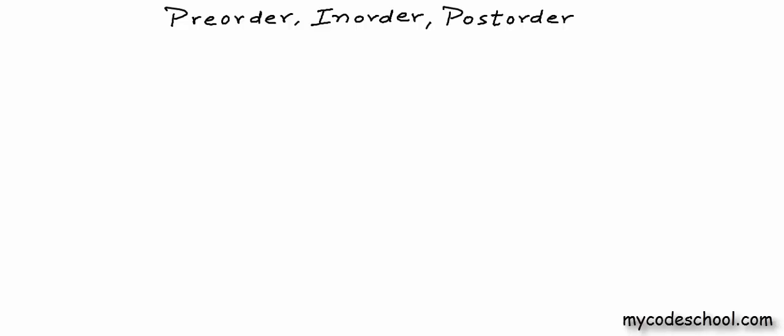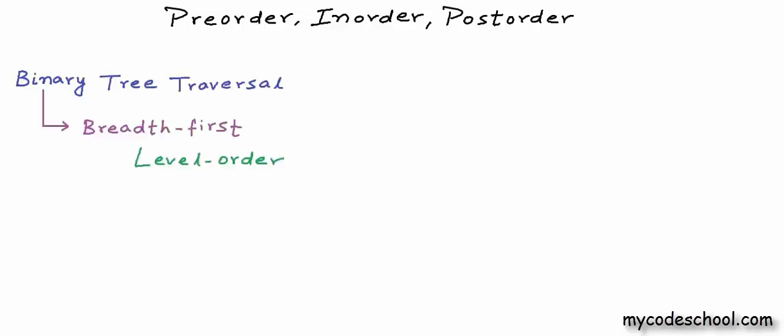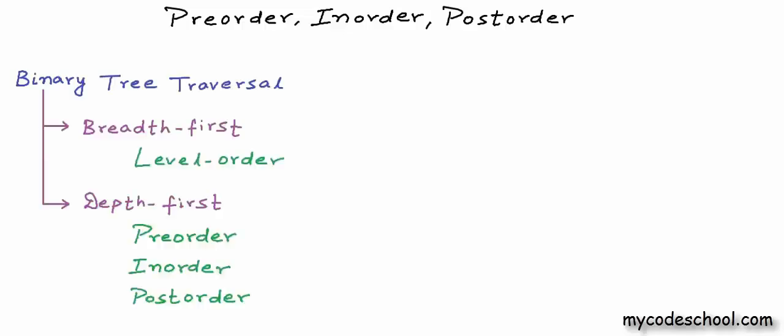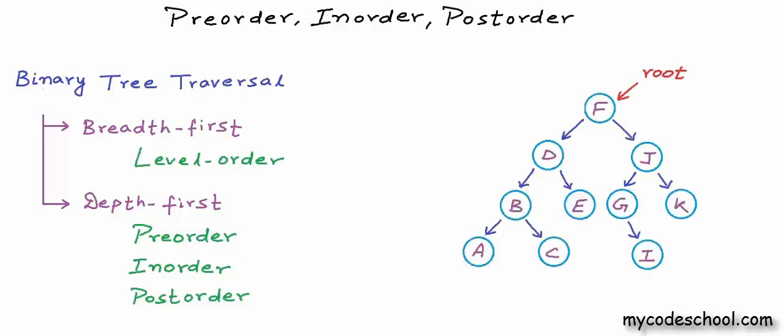In our previous lesson, we talked about level order traversal of binary tree, which is basically breadth first traversal. Now in this lesson, we are going to discuss these three depth first algorithms: pre-order, in-order and post-order.